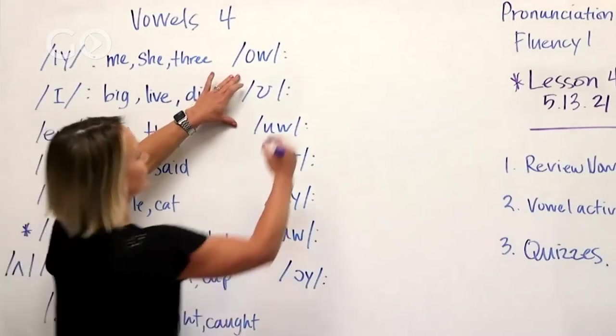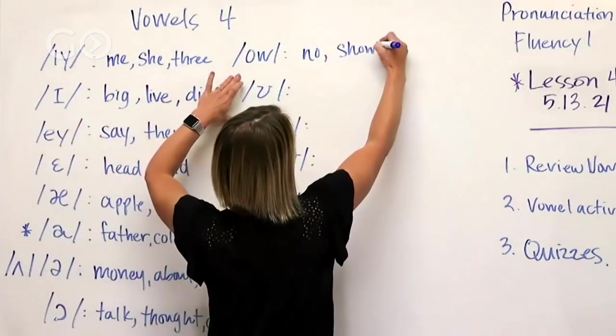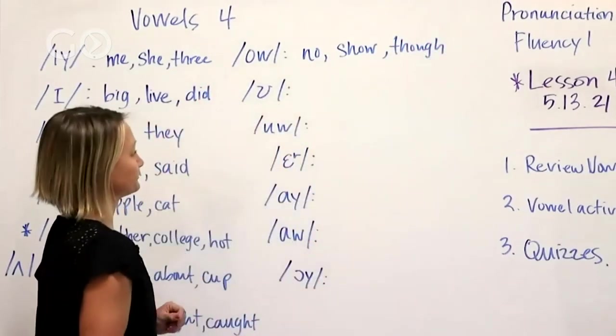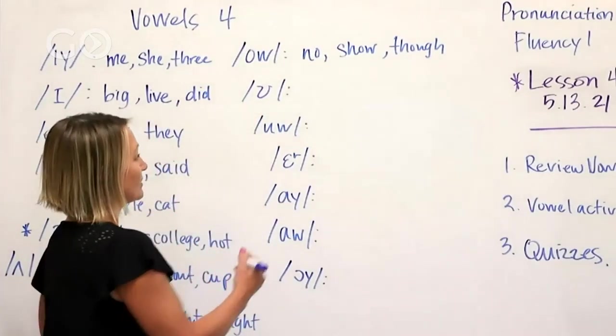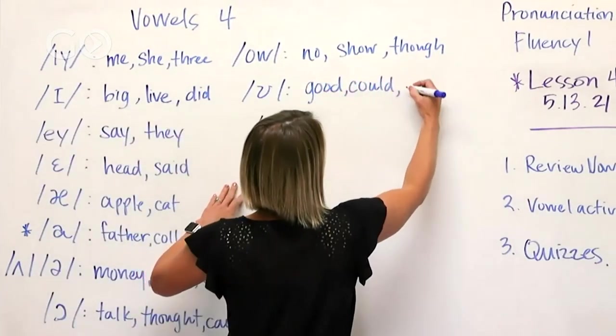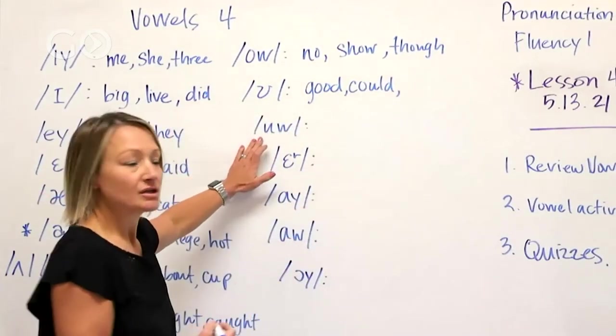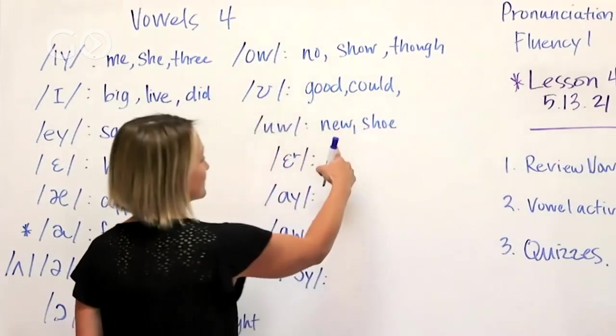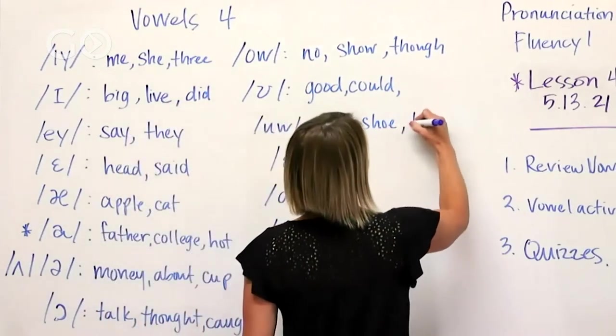Here we've got the long O, so no, show, though. This is a short sound like good, could. And then here we've got ooh, so like new, shoe. I think this one has the most variety of spellings - new, shoe, through.